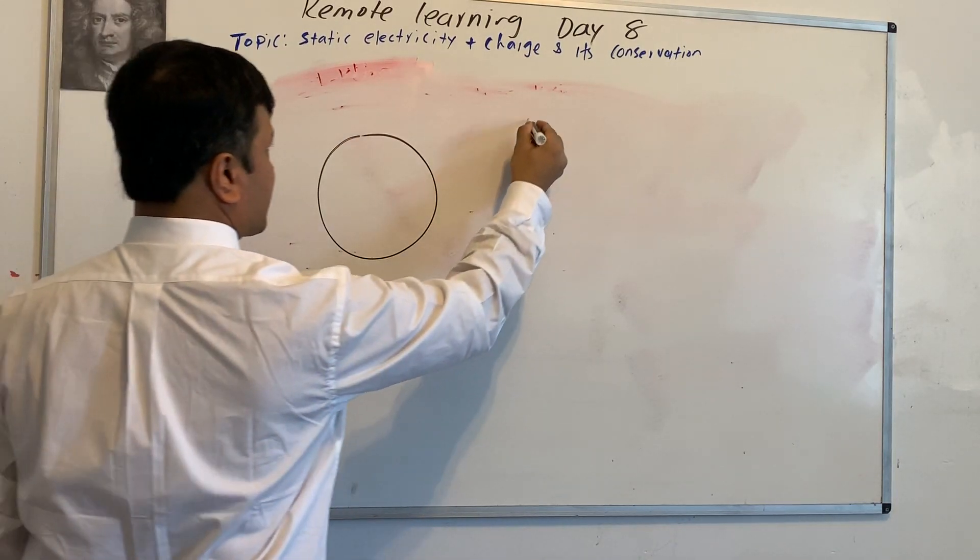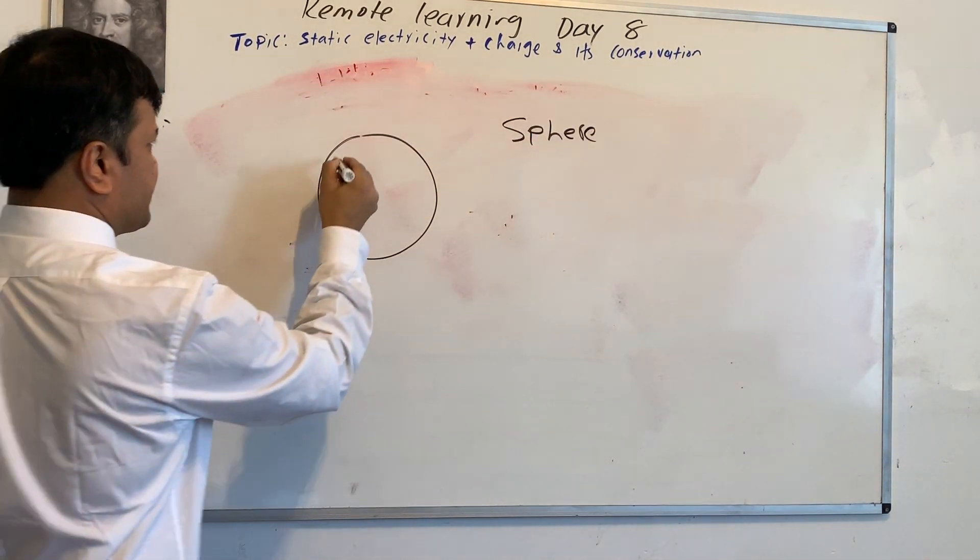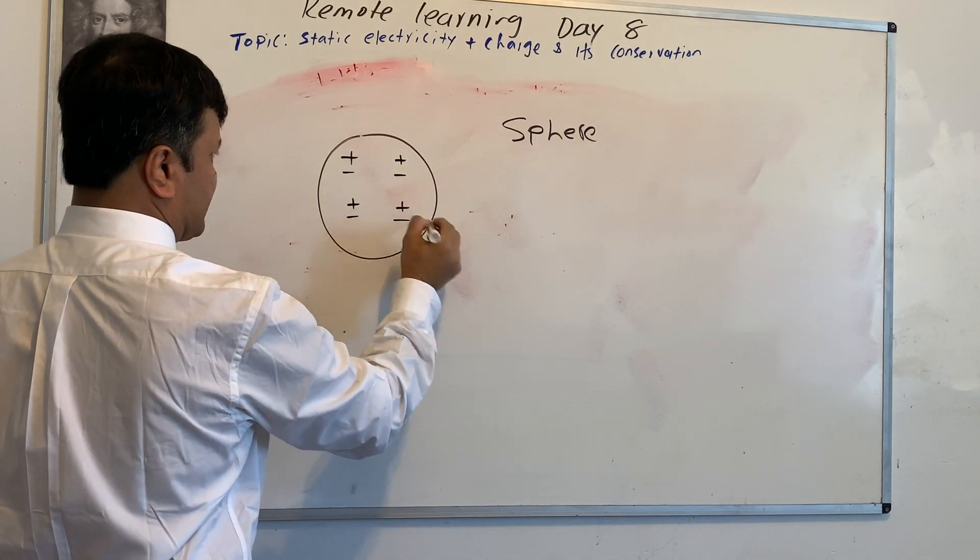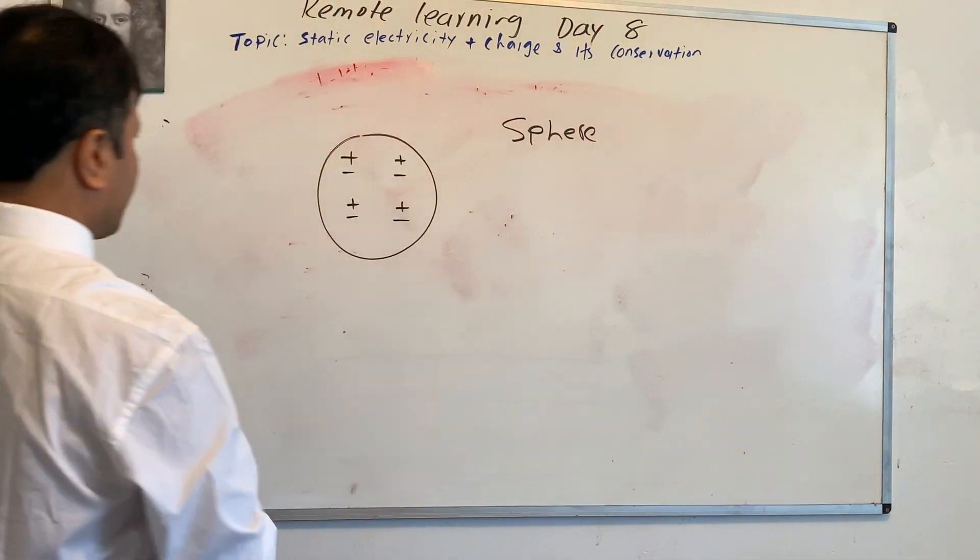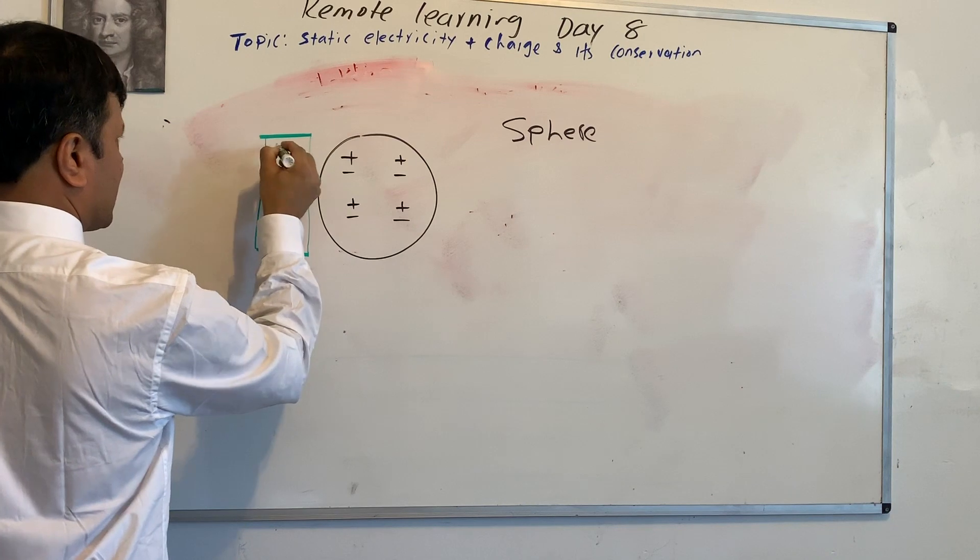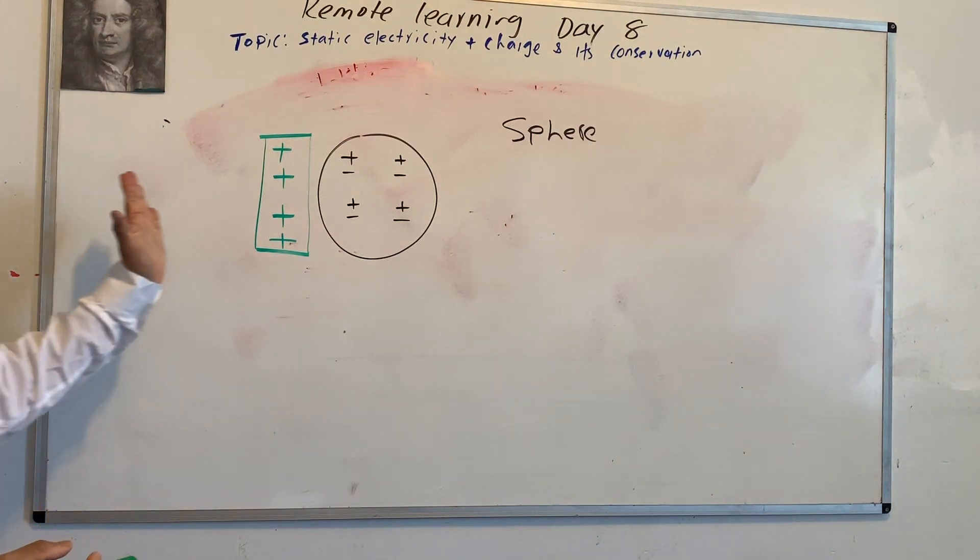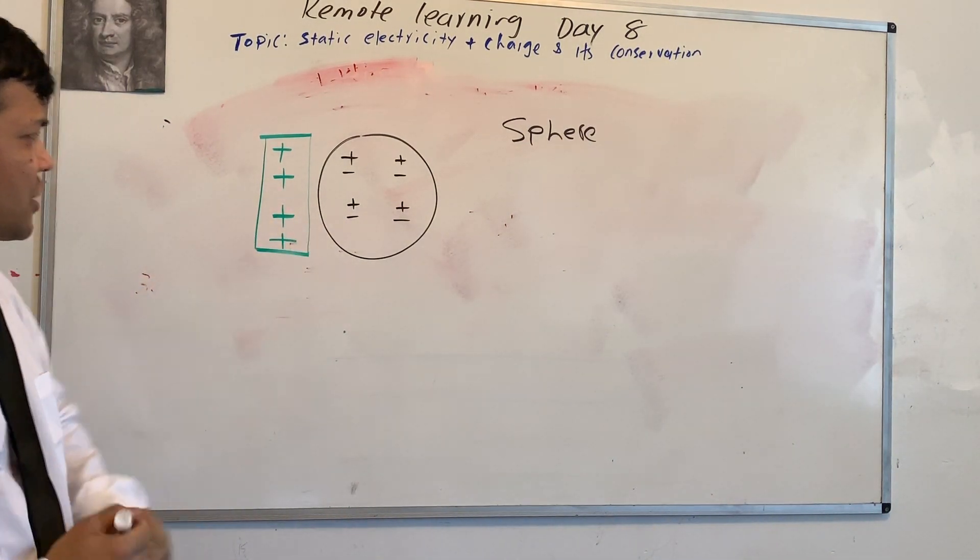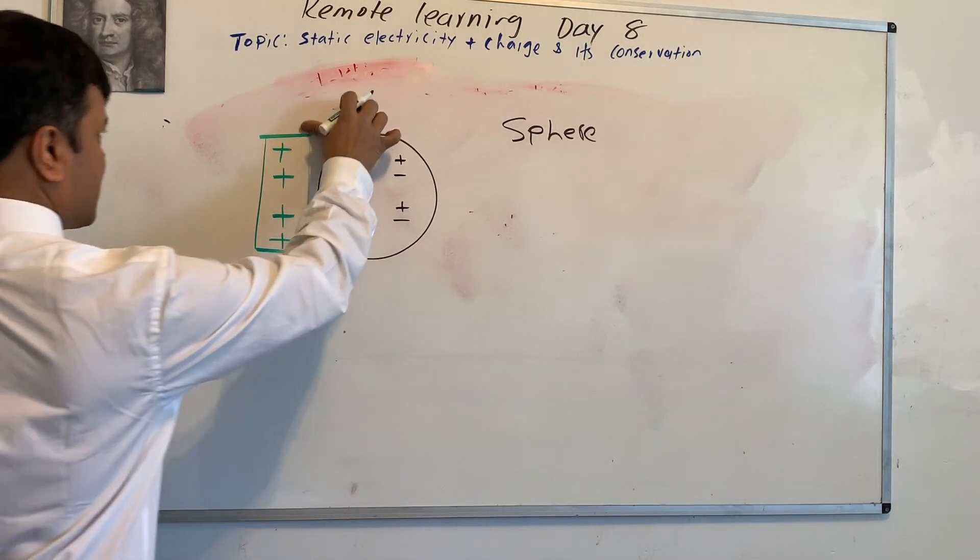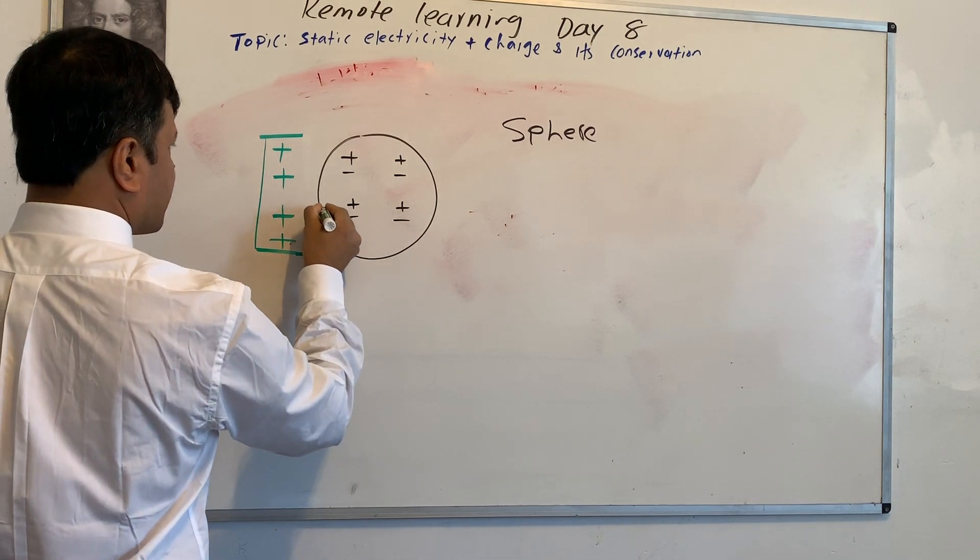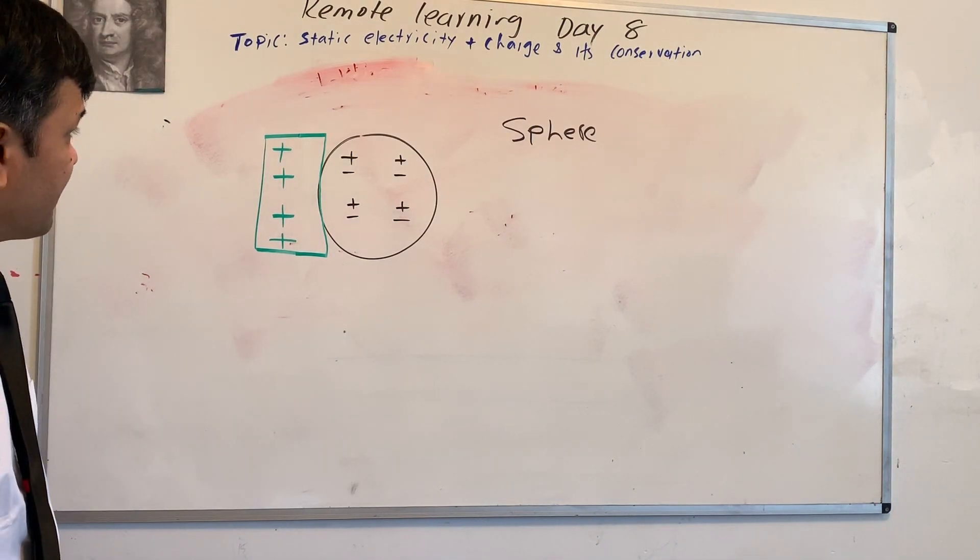If I have a sphere, and the sphere is neutrally charged. Now, if I have a positively charged object very close to the sphere, and if this positively rod touches the sphere, then what would happen?